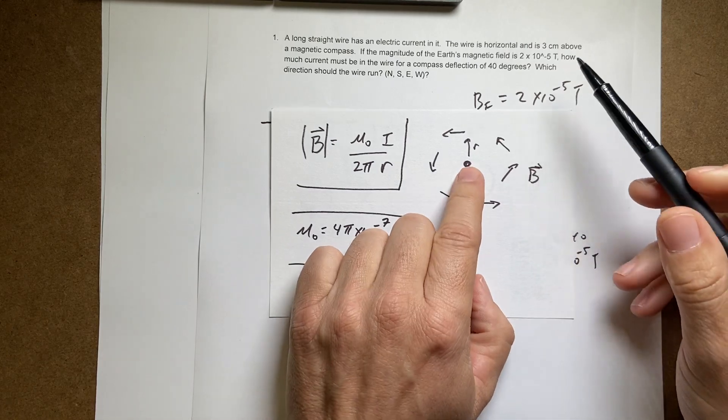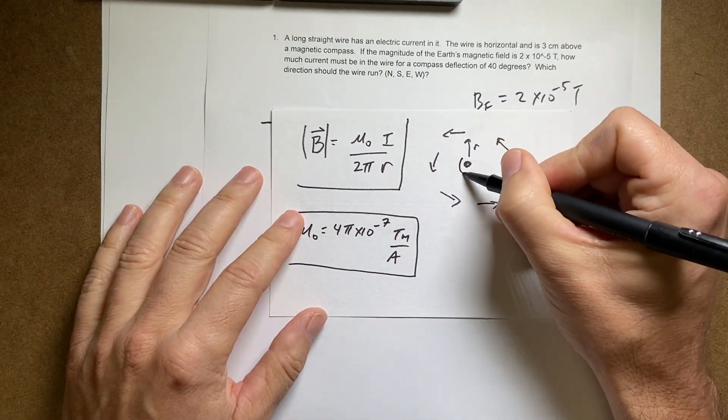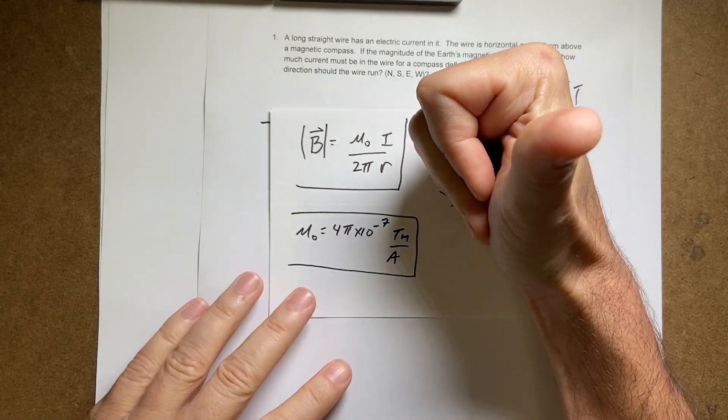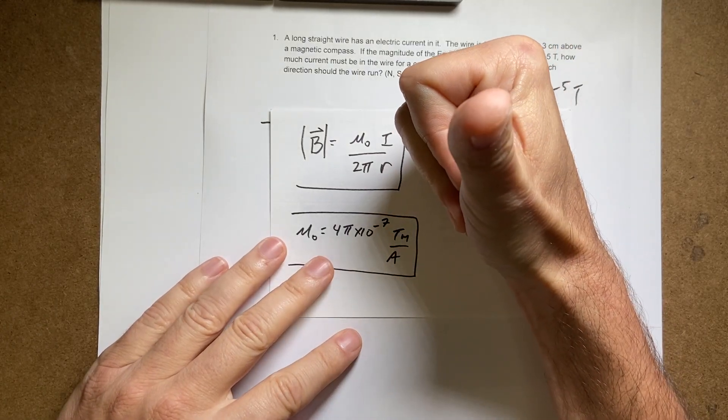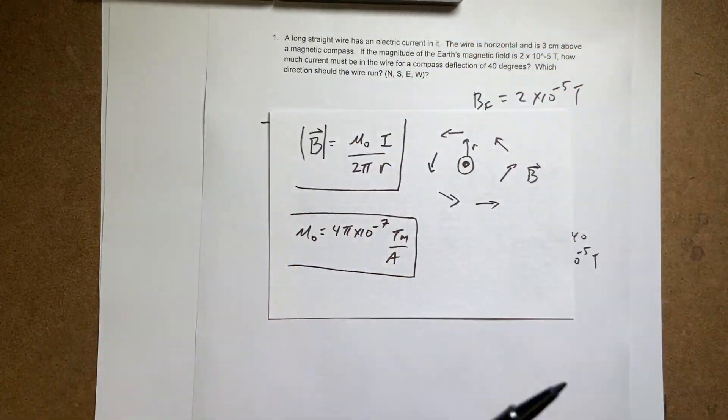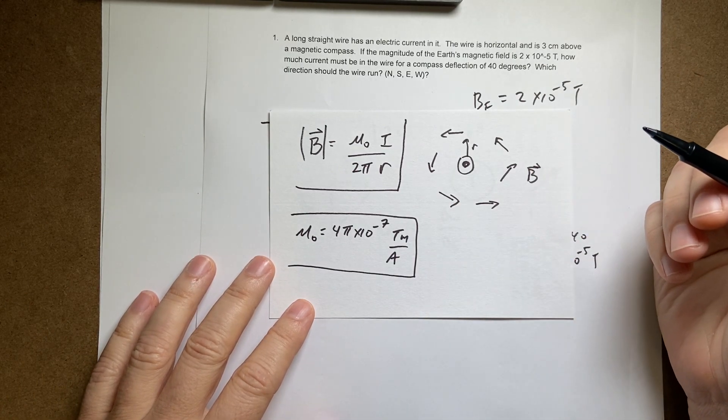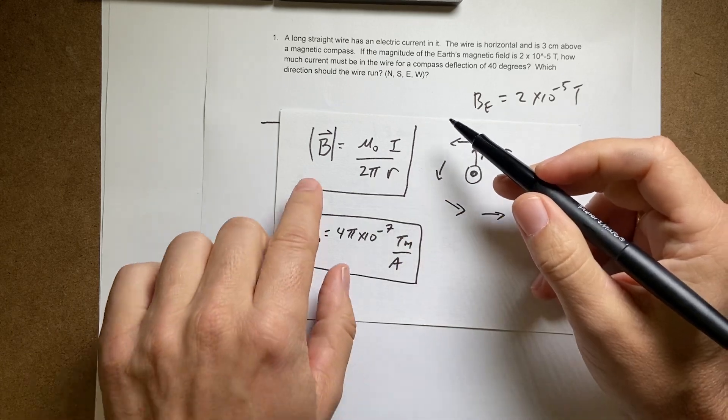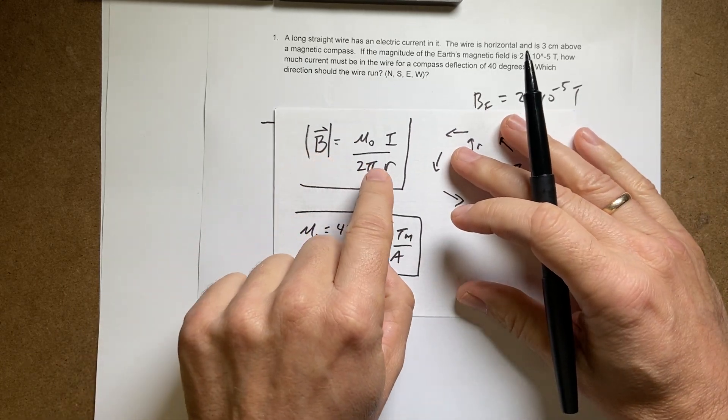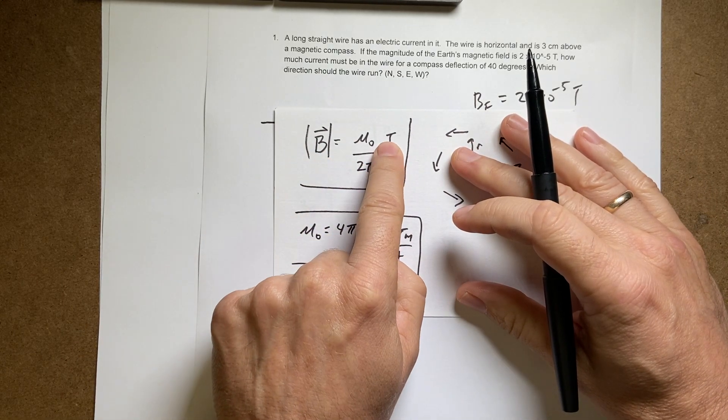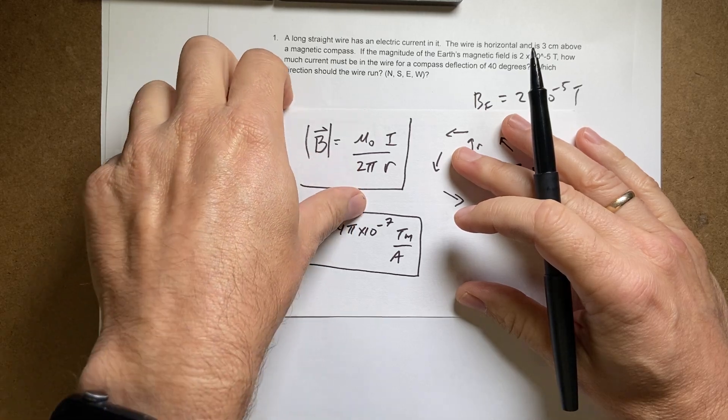So here's a little reminder. If the current is coming out of the paper like this, you'd put your thumb in the direction of the electric current. And your fingers would show the direction of the magnetic field. Okay. So we already know the direction and all that. We just want the magnitude. So I know the magnitude of the wire. And I know the distance. I want to solve for i.